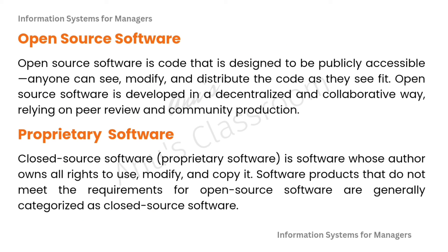Open source software is code that is designed to be publicly accessible — anyone can see, modify and distribute the code as they see fit. It is developed in a decentralized and collaborative way, relying on peer review and community production. Famous examples include Linux, Unix, and Red Hat. Proprietary software is the opposite — closed source — where the authors retain all rights to use, modify and copy the software. Examples include Microsoft Word and Adobe PDF Reader.